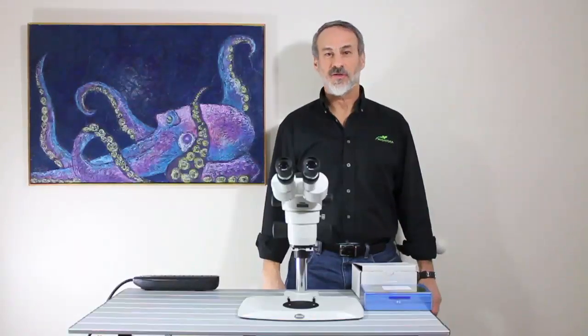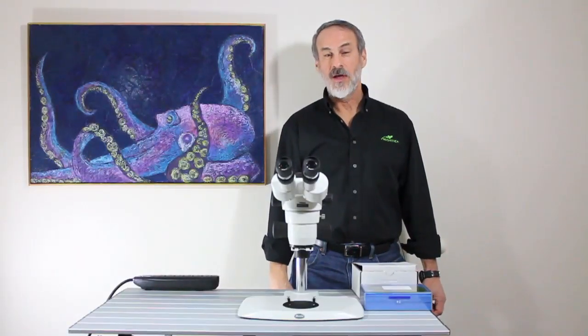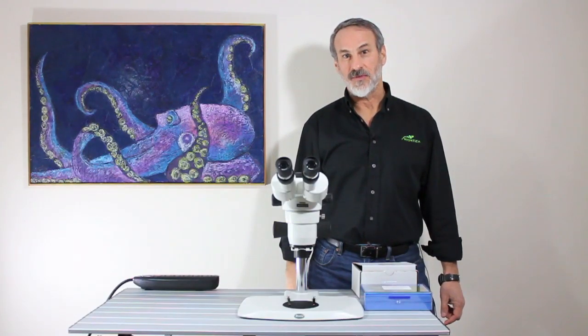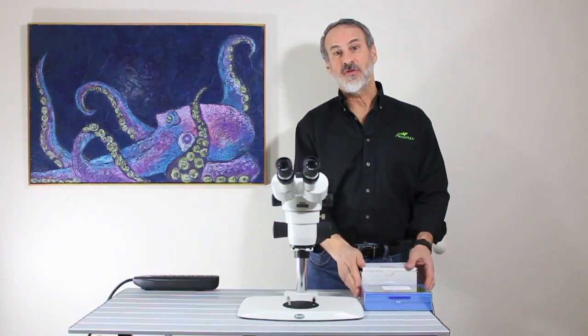I want to show you how quick and easy it is to use the Knight C SFA system to adapt just about any conventional stereo microscope for fluorescence. Everything you need is in these two small boxes.